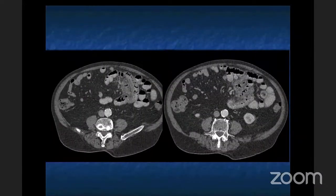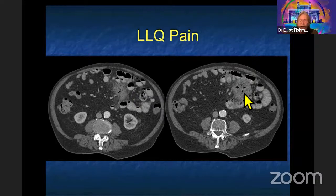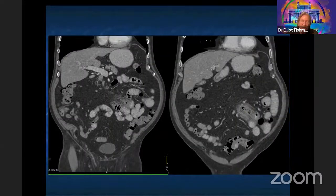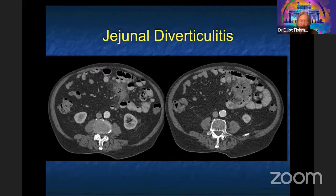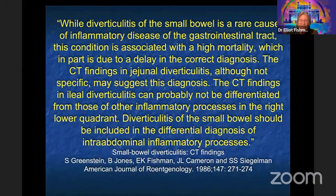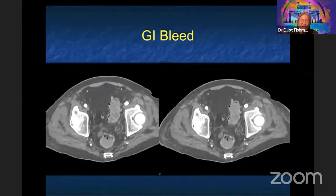Left lower quadrant pain. Answers: carcinoid, diverticulitis, paniculitis. This is coming off the small bowel — it looks like diverticulitis, and in fact it is, but it's not typical colonic diverticulitis. It's small bowel diverticulitis, specifically jejunal diverticulitis, which is far less common. It often looks like a perforation. Patients are typically treated conservatively, so it's an important diagnosis to make.